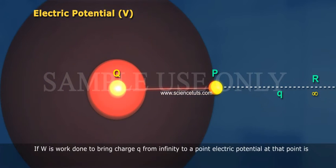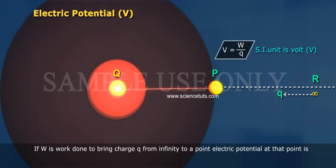If W is work done to bring charge Q from infinity to a point, electric potential at that point is V is equal to W by Q. SI unit is Volt V.